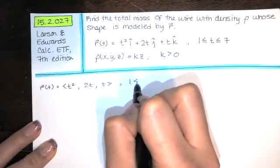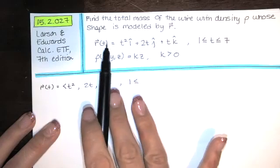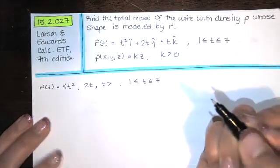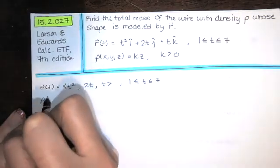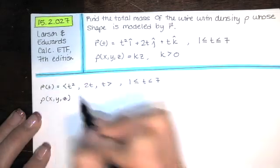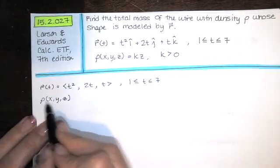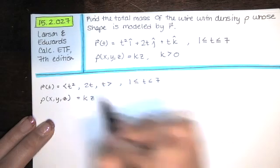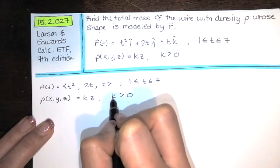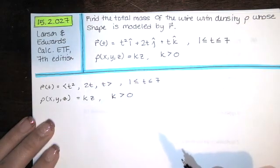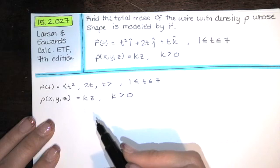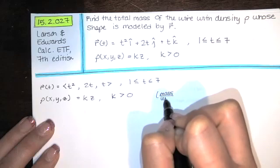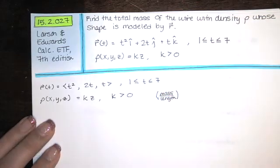We're told that the wire is modeled by this for T between 1 and 7. And we're told that density is a function of position in that wire. The density increases as the Z value increases, turns out to be proportional to the Z value. And that constant of proportionality K is positive, of course, because this is a mass per unit length.